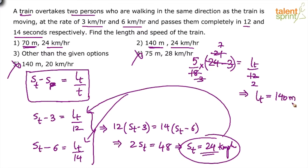Anyway, calculation is your lookout. You know how to proceed with this one, right? So 140 meters is the answer. Length of the train is 140 meters, which is option 2, right?